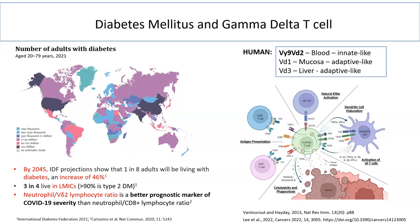During the pandemic, diabetes was one of the risk factors for severe COVID-19 and breakthrough infection. Previous findings also show that the neutrophil to delta 2 lymphocytes ratio is a better prognostic marker to predict severity of COVID-19 compared to the conventional neutrophil to CD4 T cell ratio. That's why I'm interested to explore more the role of gamma delta T cells in diabetes mellitus.